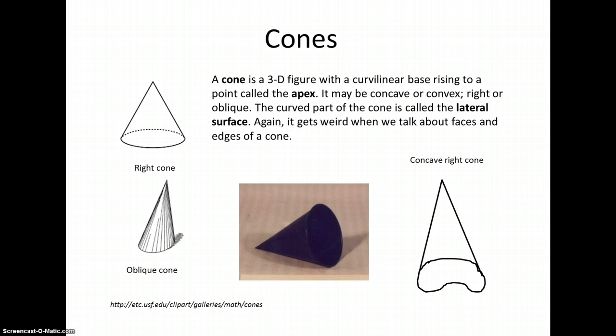A cone is a three-dimensional figure that has a curvilinear base. Remember, that means it can be circular, oval, or squiggly like a kidney bean. And this base then rises to a single point which we often call the apex.